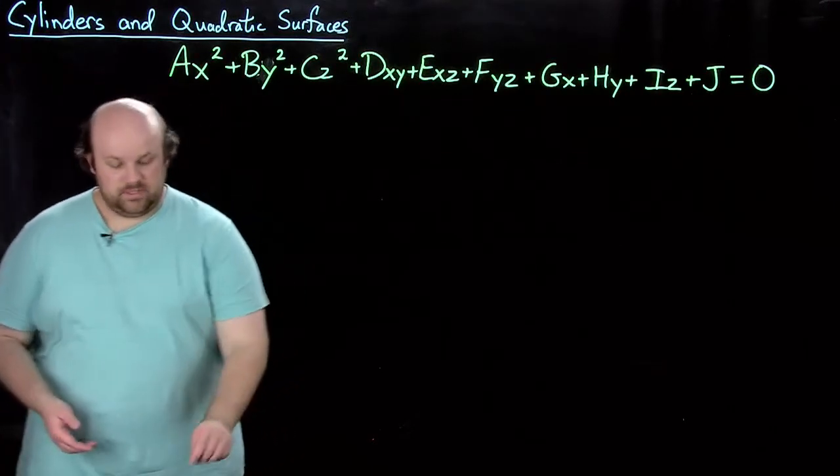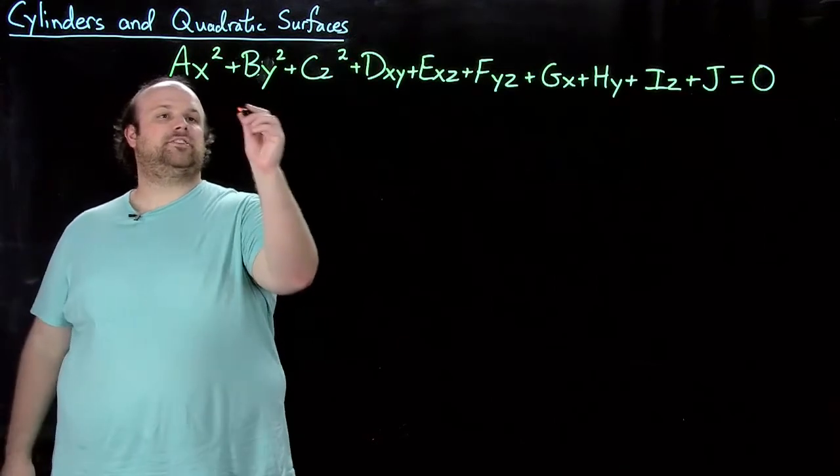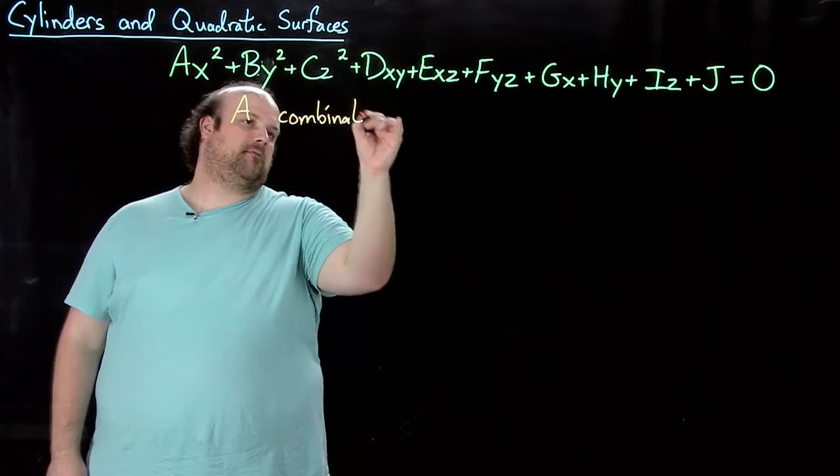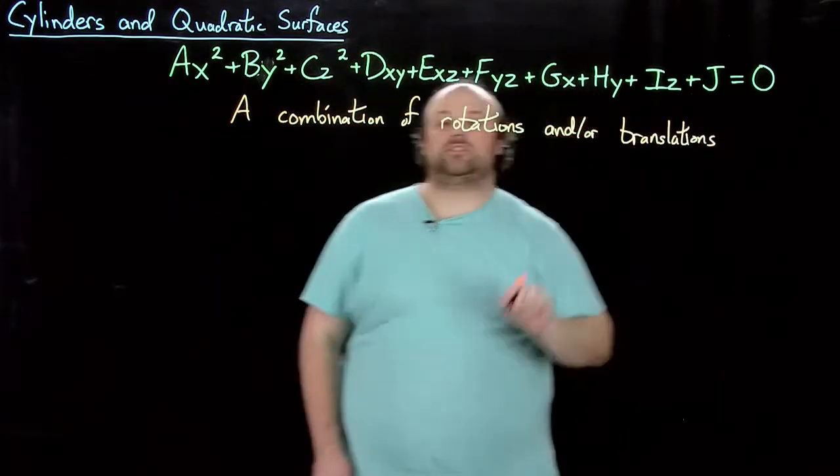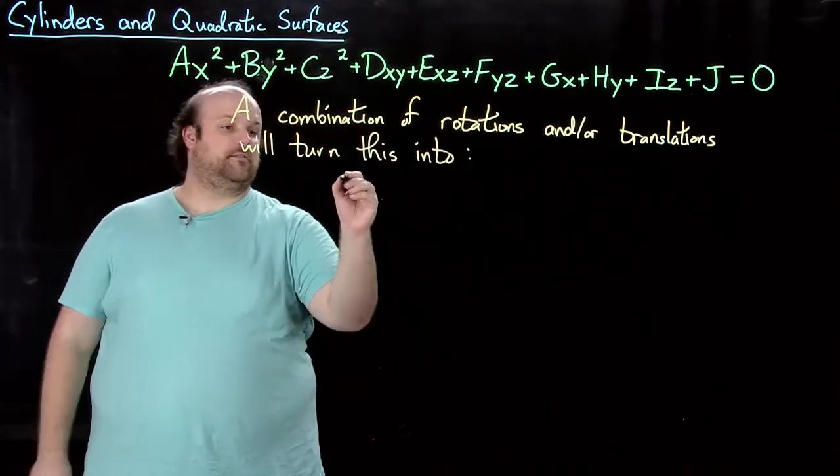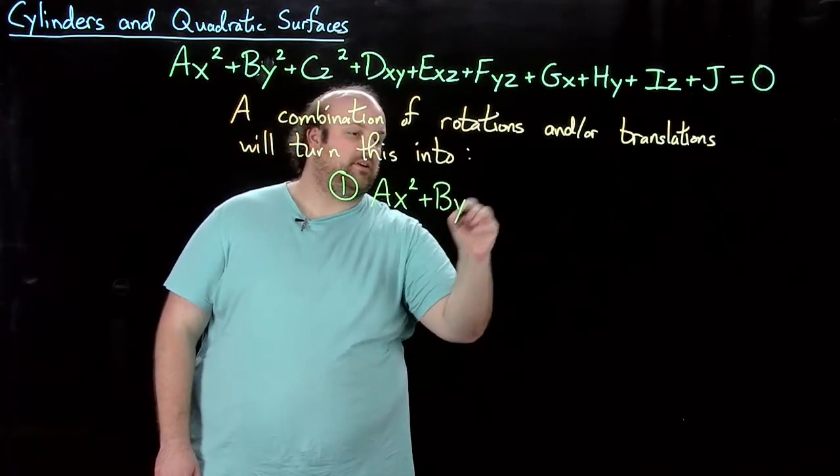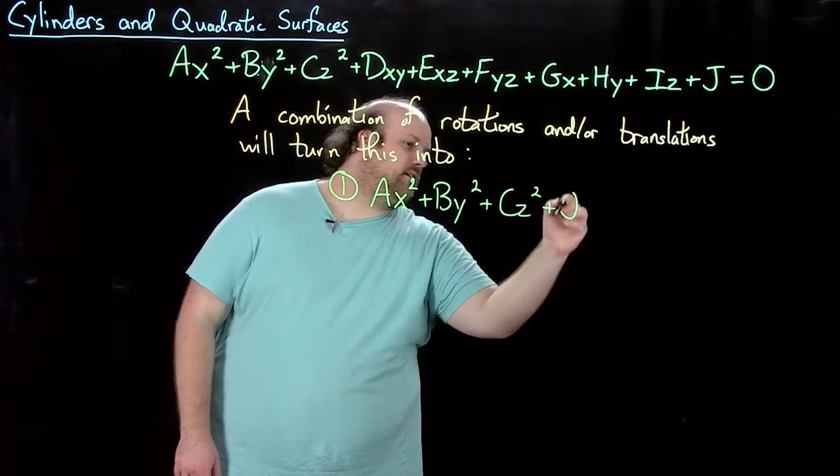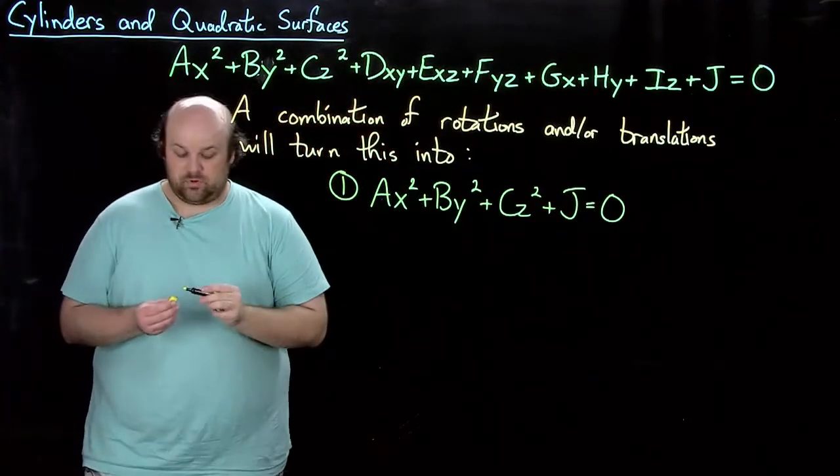So we can do rotations. So let's say a combination of rotations and/or translations will turn this into Ax squared plus By squared plus Cz squared plus j equals 0. So that's one possibility.